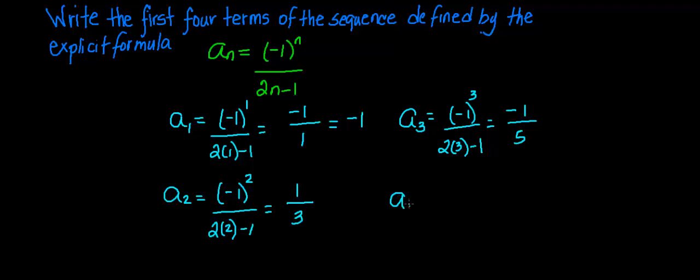a sub 4 is negative 1 to the fourth power over 2 times 4 minus 1. And that equals positive 1 over 8 minus 1, which is 7.